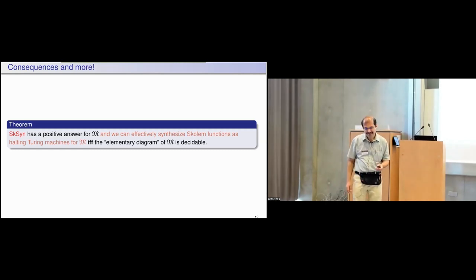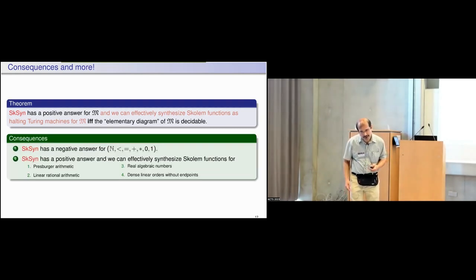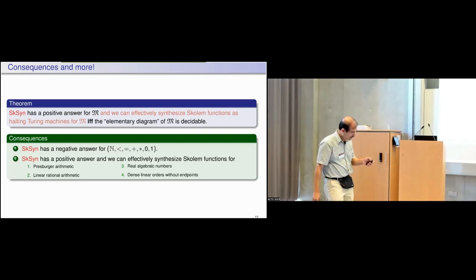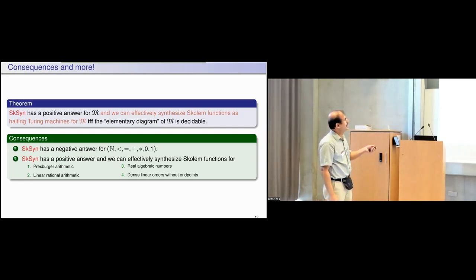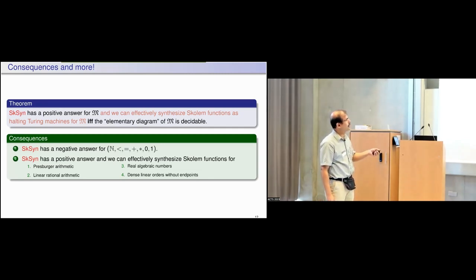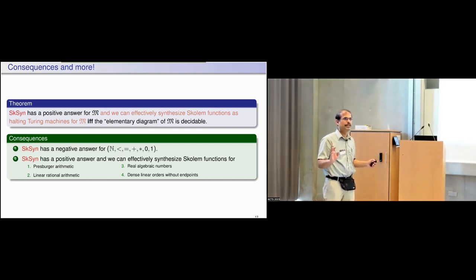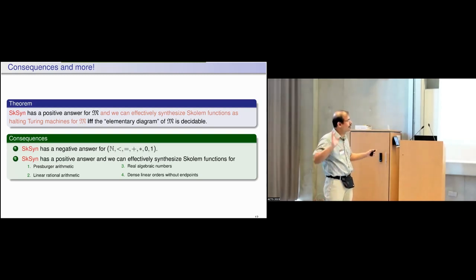Here are some consequences: it turns out the elementary diagram is not decidable for the theory of natural numbers with plus and multiplication, so that is a negative answer. For some theories the elementary diagram is decidable: Pressburger arithmetic, linear rational arithmetic, real algebraic numbers, and dense linear orders without endpoints. Our result says that for all of these you can have algorithmic synthesis of Skolem functions.